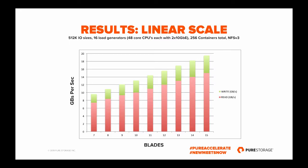FlashBlade is certainly capable of a lot more. What you see here is linear scaling of FlashArray bandwidth anywhere from 10 gigabytes per second all the way up to 20 gigabytes per second, varied by the number of blades configured in a single system. Many more concurrent builds can be done in parallel, enabling organizations to accelerate time to market and drive developer productivity.